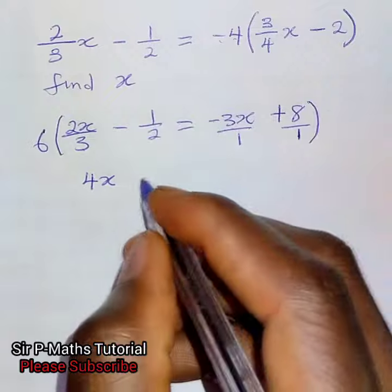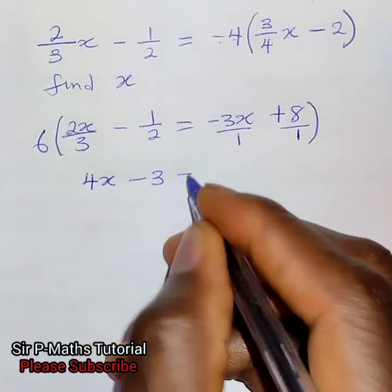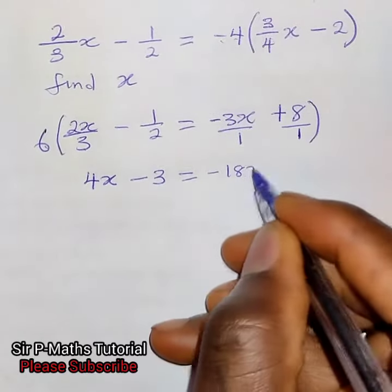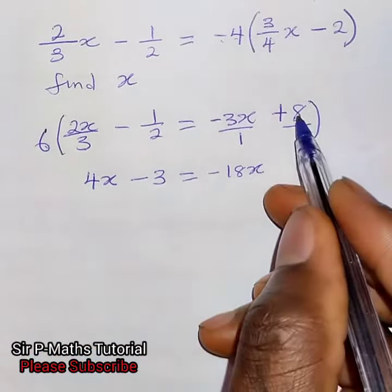Go to them, 6 multiply minus 3x give me minus 18x. 6 multiplying 8 give me positive 48.